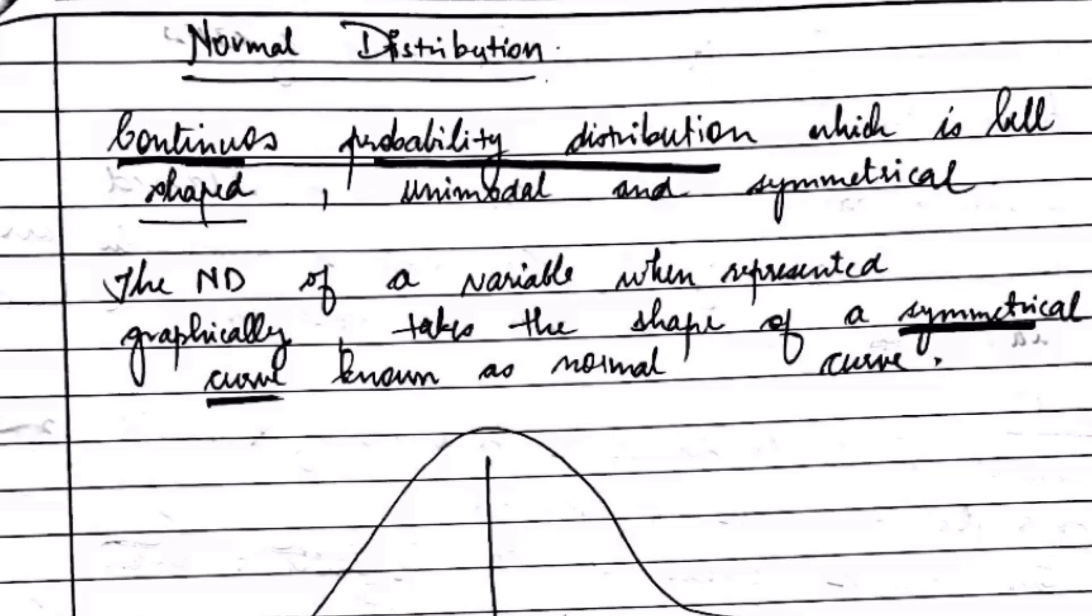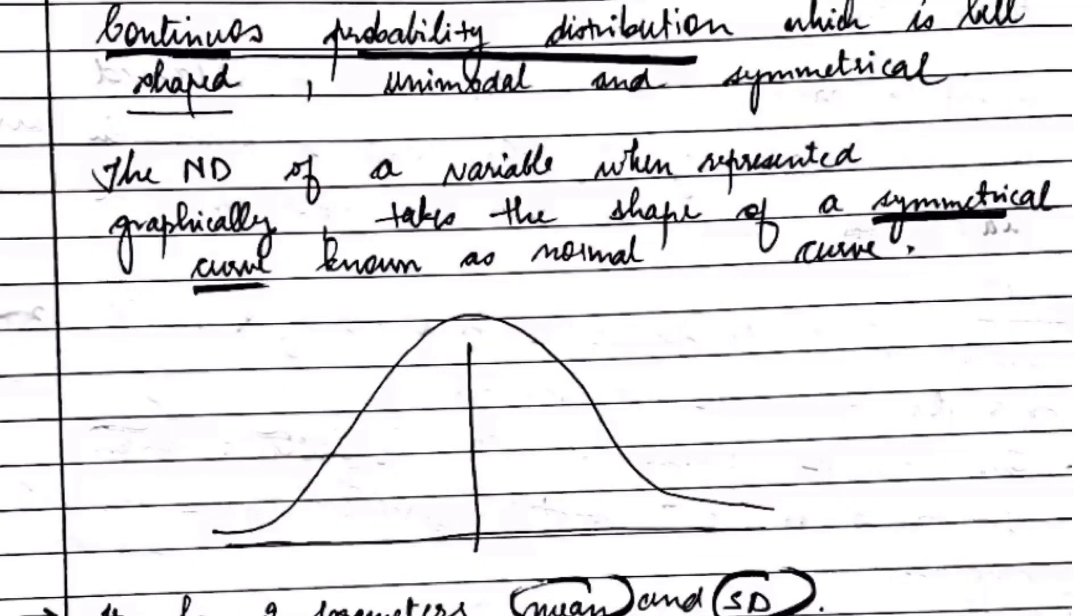Let's start with normal distribution. It is defined as continuous frequency distribution of infinite range. For example, height, blood pressure, measurement error, and IQ scores are all measured by normal distribution.